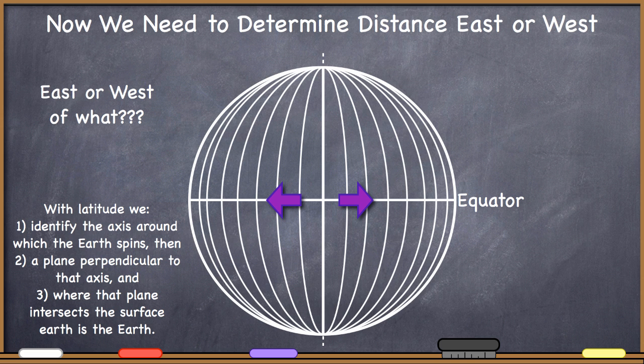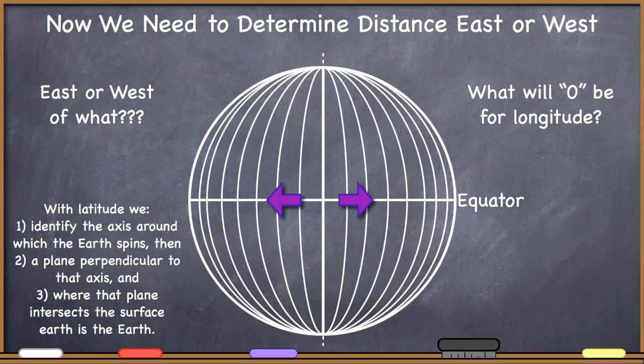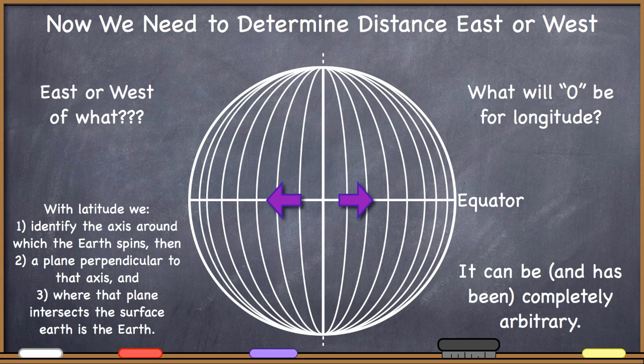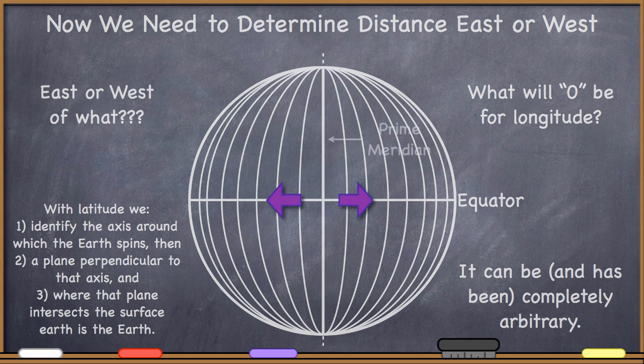We don't have that with longitude. What exactly is going to be zero for longitude? Well, actually, it can be and has been completely arbitrary.